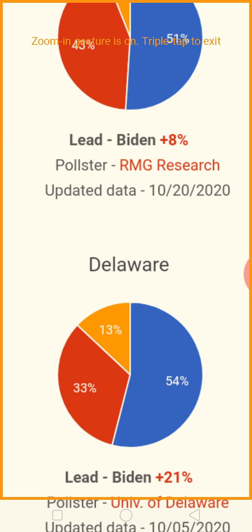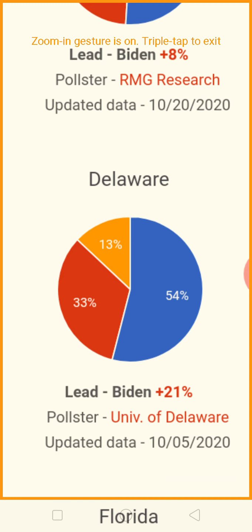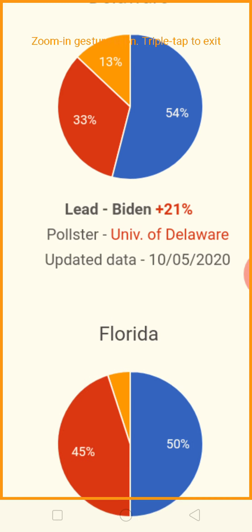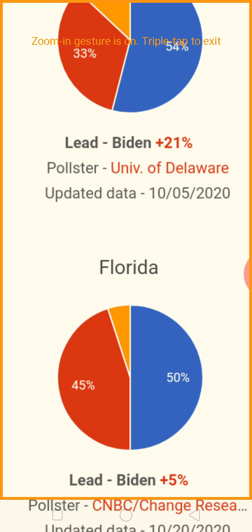Delaware sees Joe Biden in the lead — 54% to 33%. That's a 21-point lead for Joe Biden. Florida: Joe Biden has the lead, 50% to 45%.